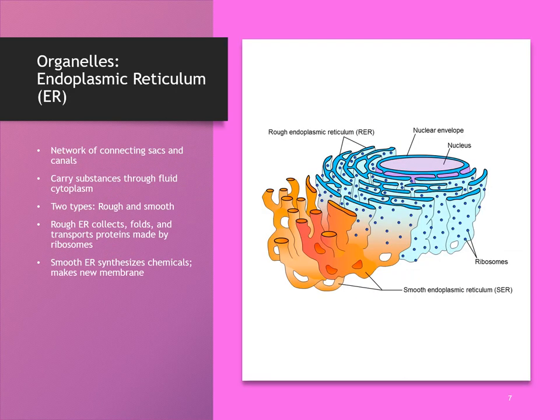Here we see the endoplasmic reticulum. The purplish circle in the image is the nucleus — the center of the cell. The rough ER, shown in blue, surrounds it with little ribosomes attached, and then the smooth ER extends out from the rough ER. This network of connecting sacs and canals is where proteins are folded and transported outside of the cell.